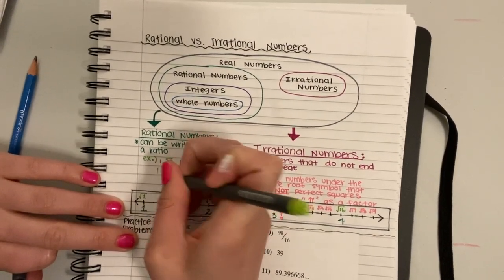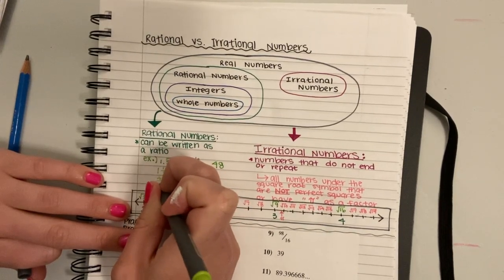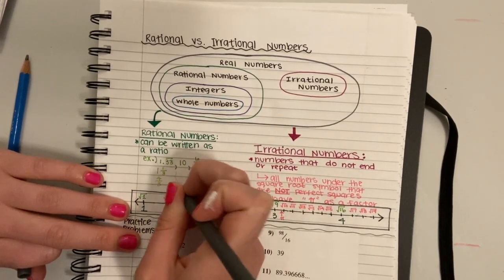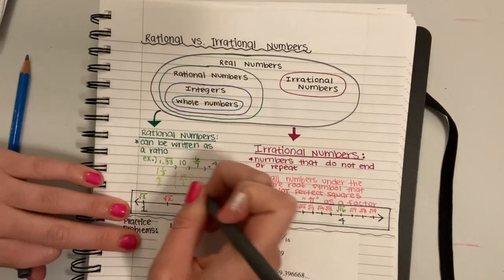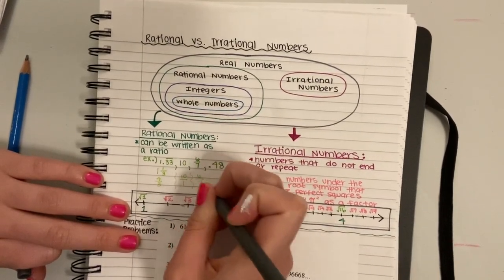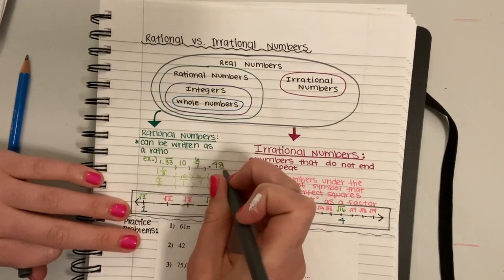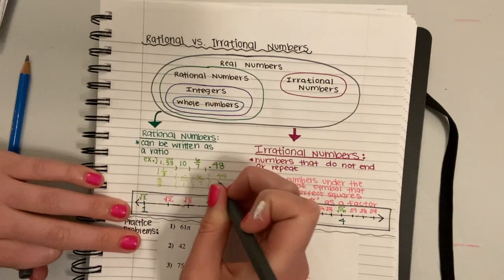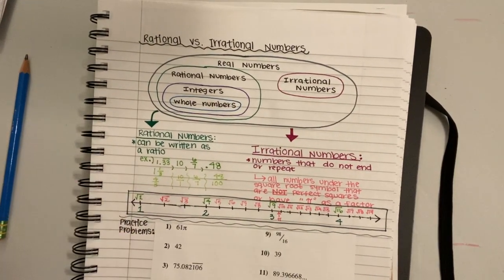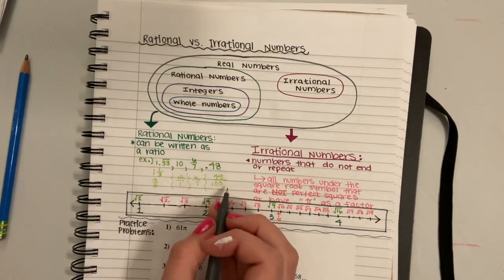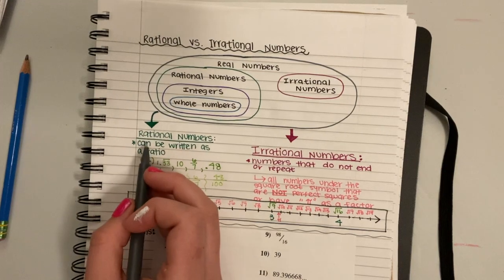So 1 and 1 third is the same thing as 4 thirds. We know that 10 is just a whole number, so we can write it as a fraction over 1. This one is already written as a fraction for us, and 0.48 is the same thing as 48 one-hundredths. So all of these can be written as a ratio or as a fraction, so they're all rational.